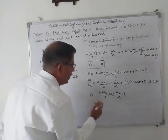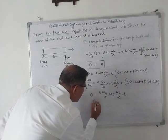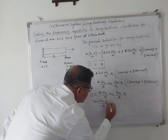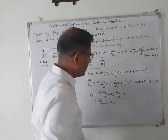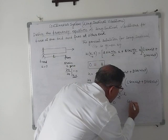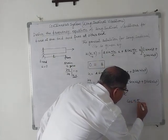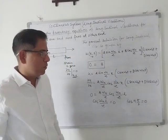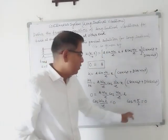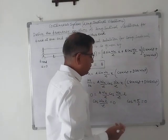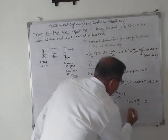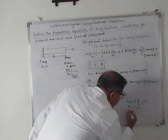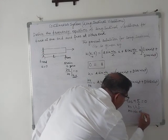So cos(omega_n * l/c) equals zero. We know that cosine can be zero at n * pi/2, where n is 1, 2, 3, and n is the number of modes.